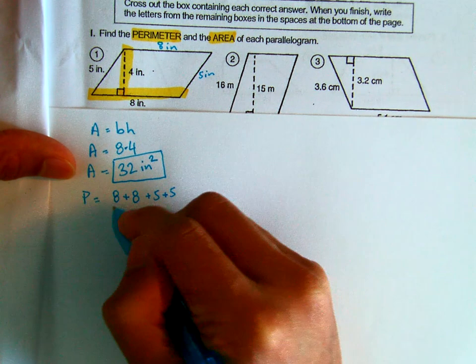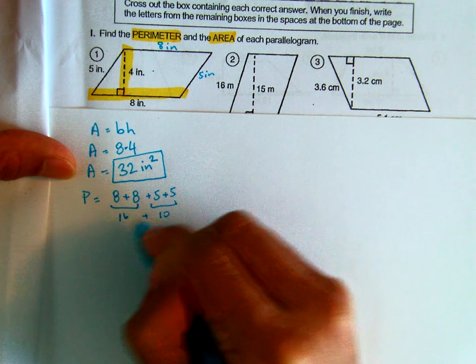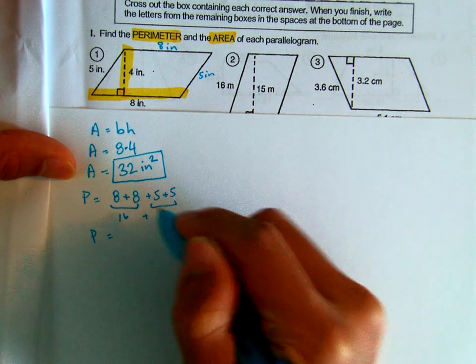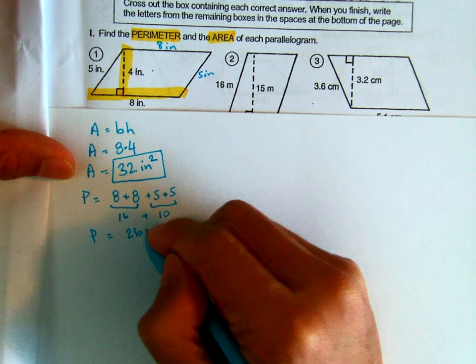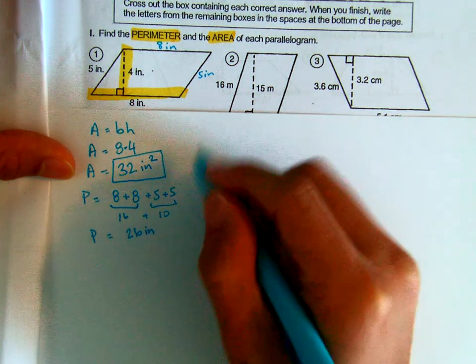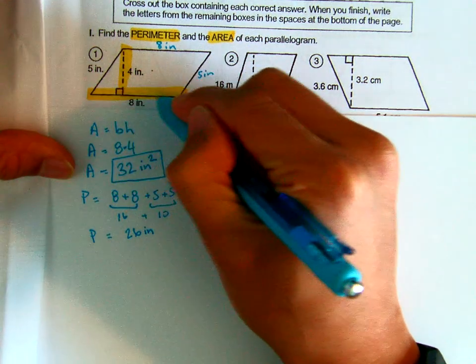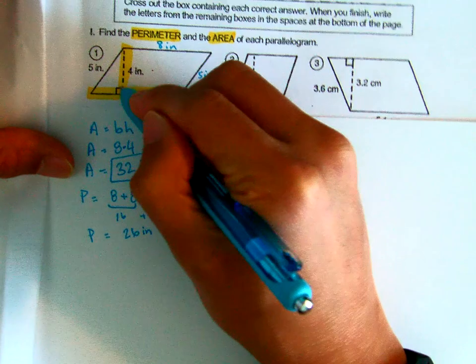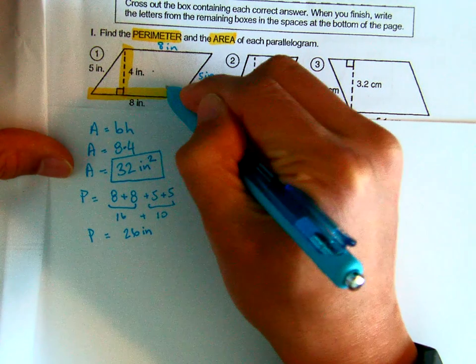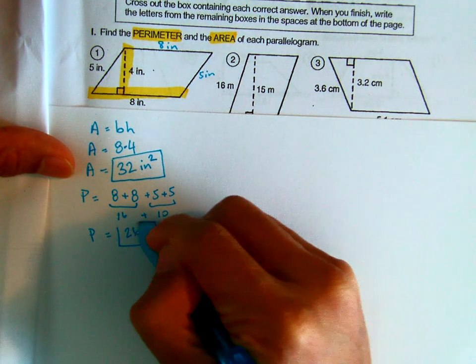8 plus 8 because you have 2 eights plus 5 plus 5. 8 plus 8 is 16, 5 plus 5 is 10. You add that up and that's going to equal 26. Again, you can use a calculator and perimeter is measured in inches, not inches squared because when you're measuring around you're not measuring by little tiny squares. Area is measured by drawing little square inches. Perimeter is just measured by inches.